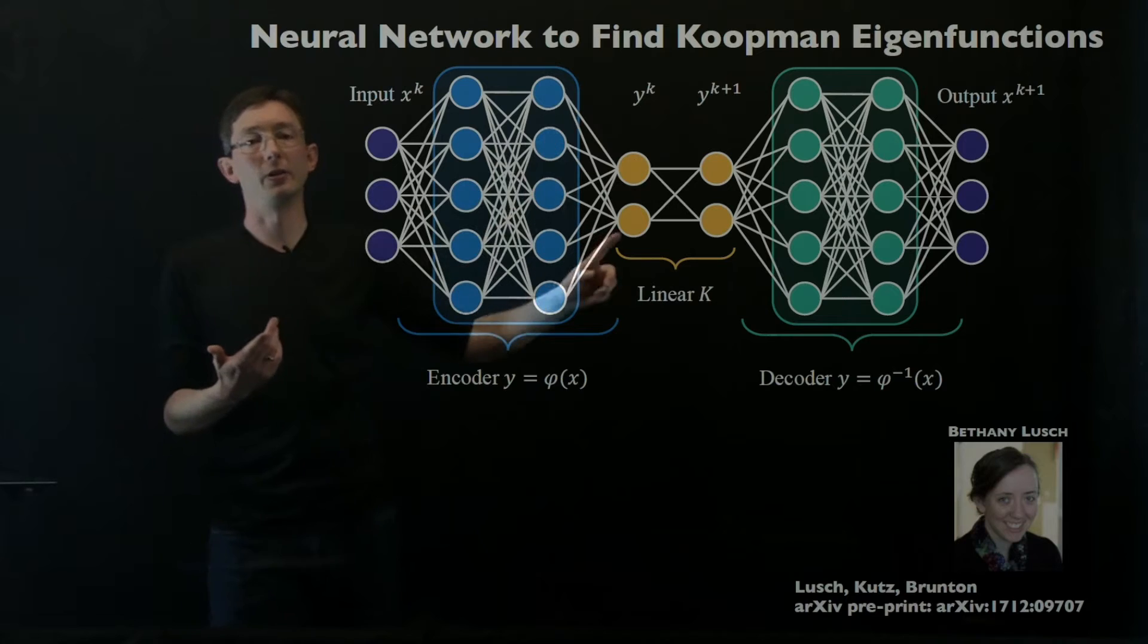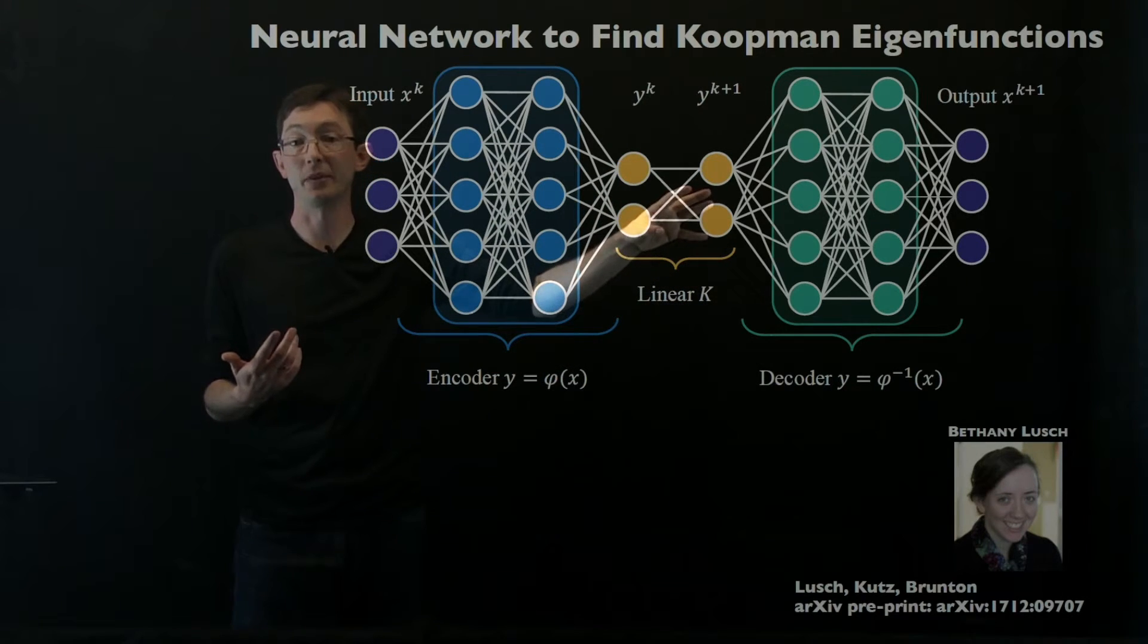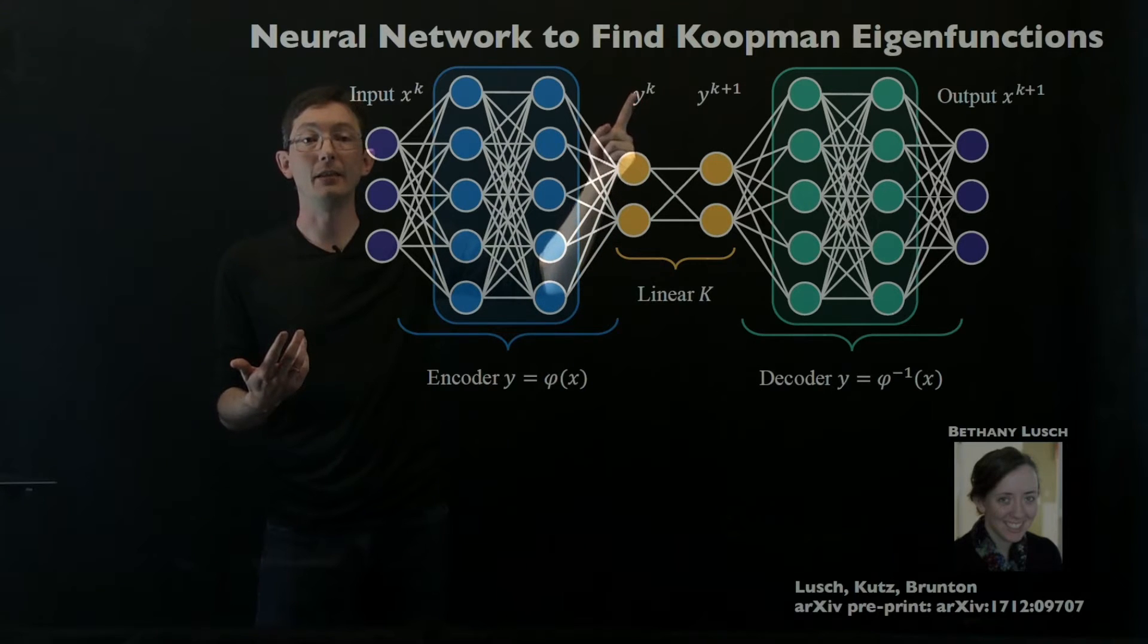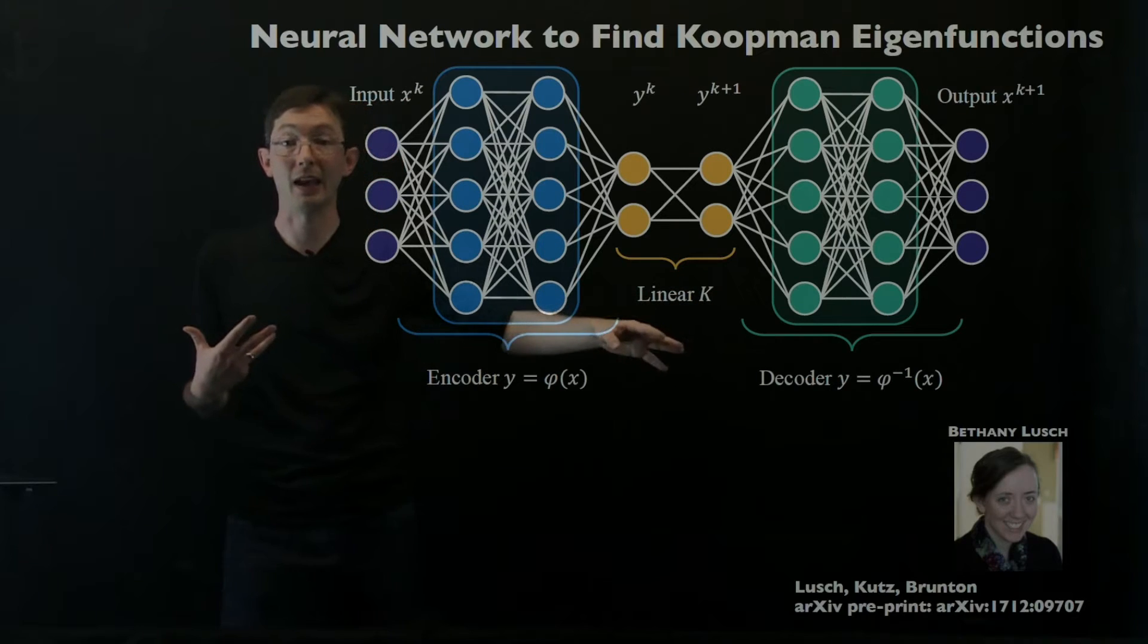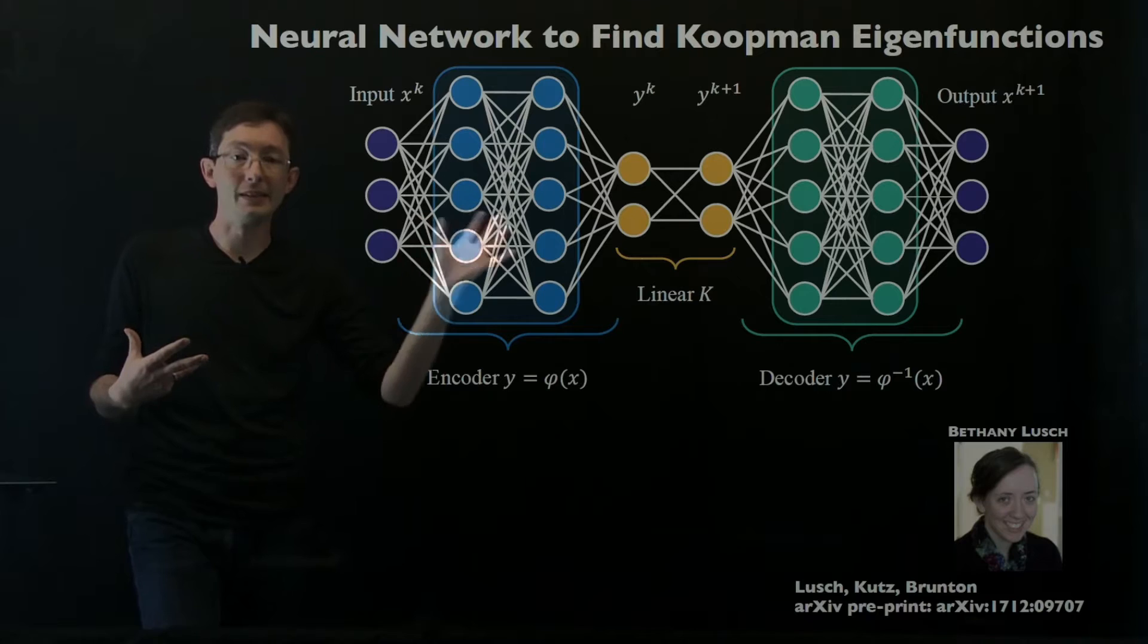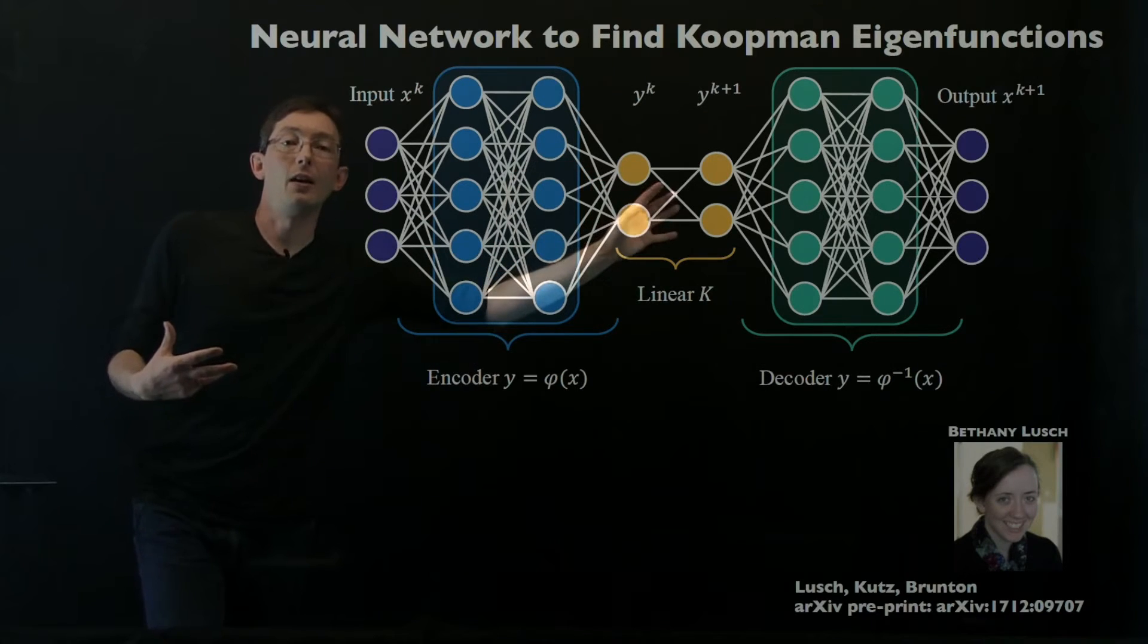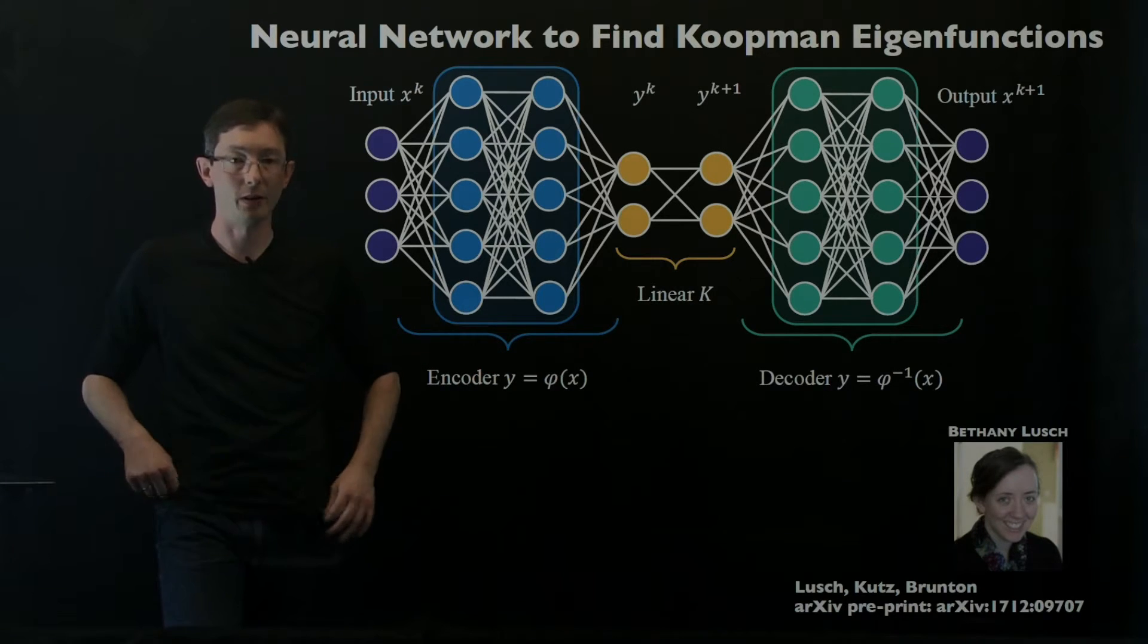What the Koopman autoencoder does is it essentially adds in this little linear time stepper in the middle to guarantee that I can advance y at time k to the next time step using a linear map K. Lots of us are doing this, building these Koopman autoencoders to find these eigenfunctions that advance linearly in time. This is a really cool approach to the eigenfunction representation problem.